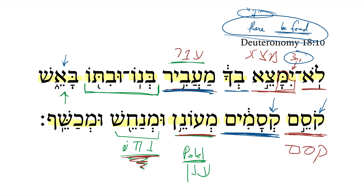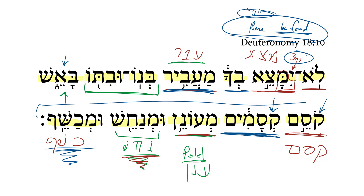And then lastly, we get another piel participle — this time kaf-shin-pe — and this would be one who is a sorcerer. And so all of these together would be the collective 'it' that shall not be found in you, in Israel.